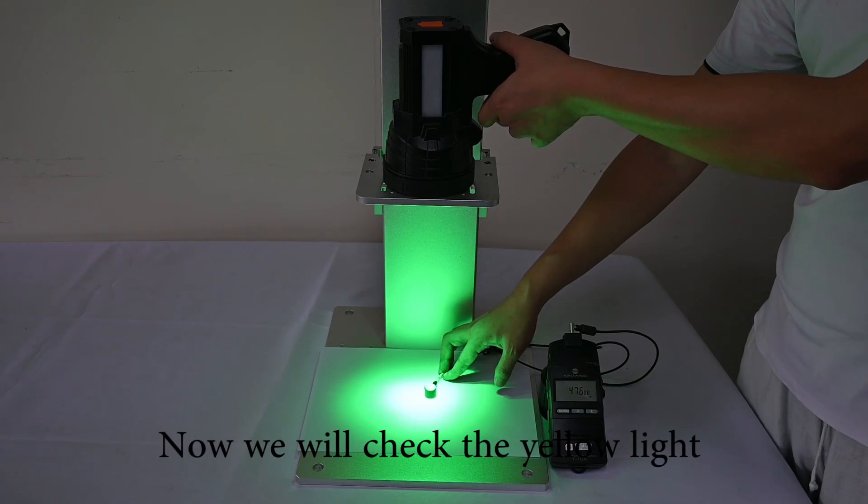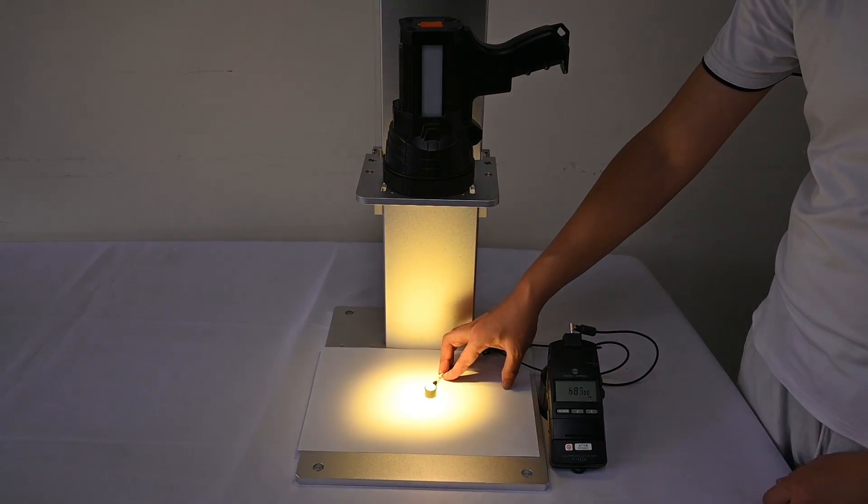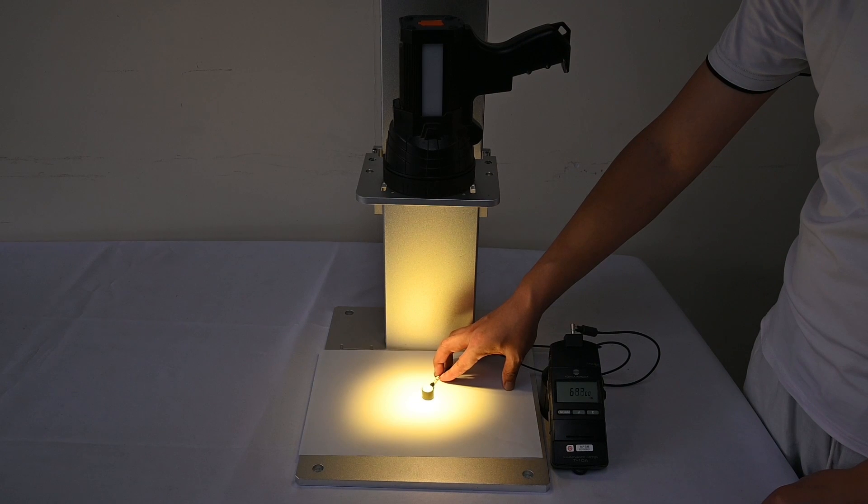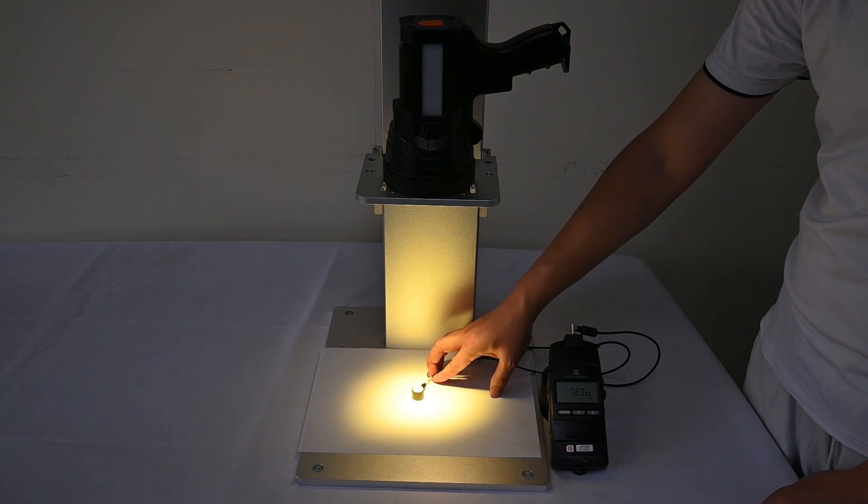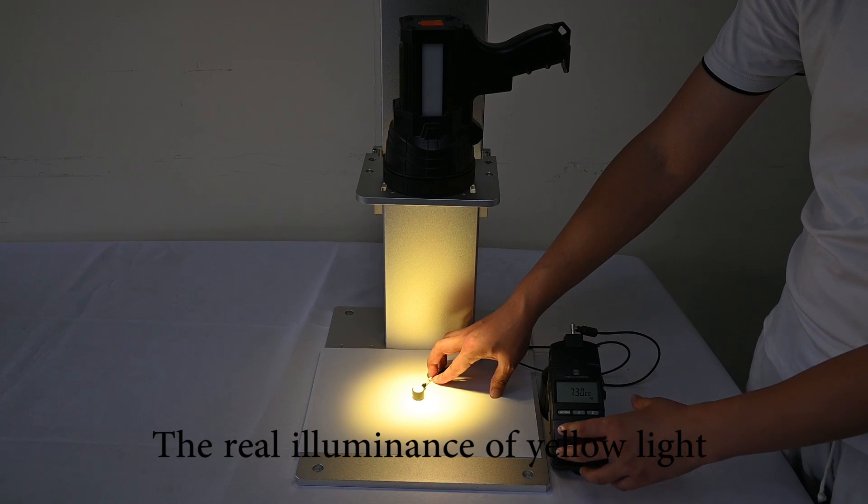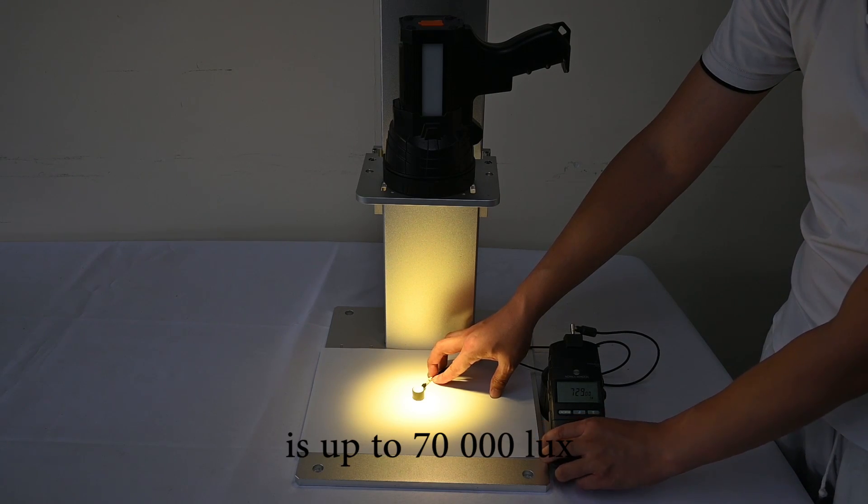And now we will check the yellow light. The real illuminance of yellow light is up to 70,000 lux.